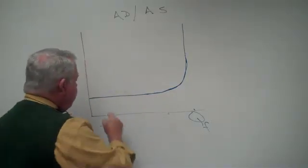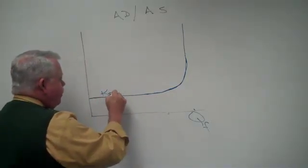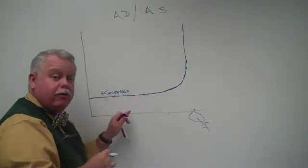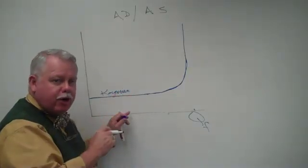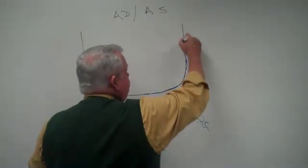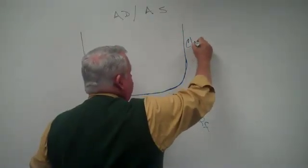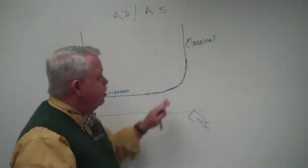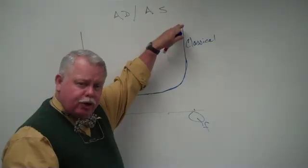And we called these the Keynesian range for the flat range. And if you had an equilibrium down here, you were in trouble. You had a recession or a depression. We talked about the vertical range as the classical range. And if you were up there somewhere, your problem was not unemployment recession. Your problem was inflation.